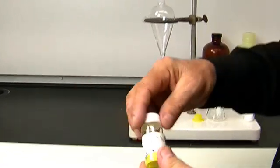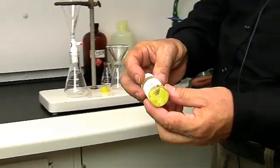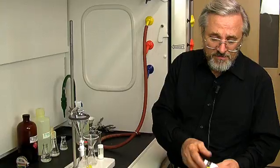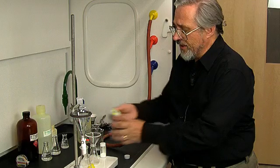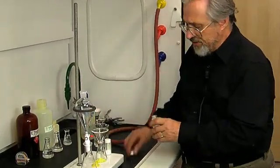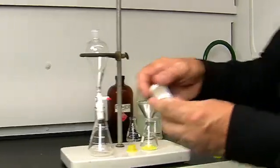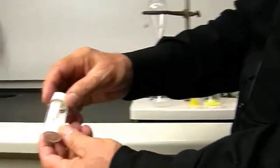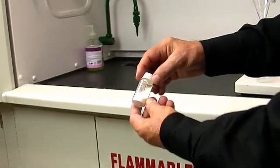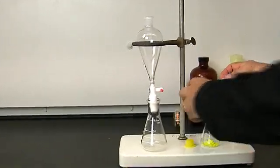So the first thing I'm going to do is to take fluorenone. You can see it's a nice crystalline yellow solid, and I'm going to put that into a flask. Then I'm going to take benzoic acid, which is a nice white solid, and I'm also going to put that into the same flask.